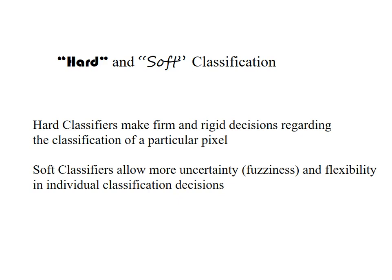We also classify approaches to classification — particularly supervised classification — as either hard or soft classifiers. Hard classifiers make firm decisions regarding the classification of a particular pixel; they don't have any fuzziness or transition between one class and another. Soft classifiers allow for more uncertainty between classes, giving the analyst flexibility in the decisions made around classification.